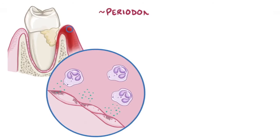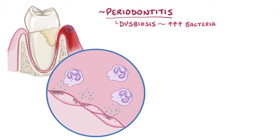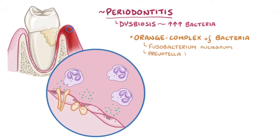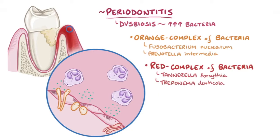In periodontitis, the process of dysbiosis is often more extreme, with even more disease-causing bacteria flourishing in the mouth. One classic hypothesis suggests that the first step is the presence of the 'orange complex' of bacteria, which includes gram-negative anaerobic bacteria like Fusobacterium nucleatum and Prevotella intermedia. Once these orange complex bacteria are established, the next step is the 'red complex,' which includes Tannerella forsythia, Treponema denticola, and its most notorious member, Porphyromonas gingivalis (P. gingivalis). Another line of thinking suggests that rather than specific bacteria being the culprits, it is the overall change in bacterial community composition that tips the scale toward periodontitis.